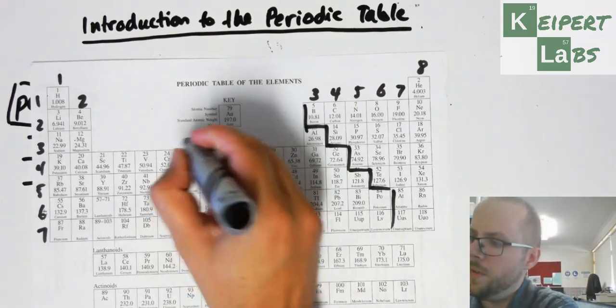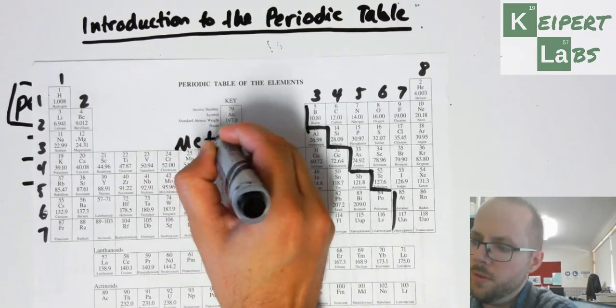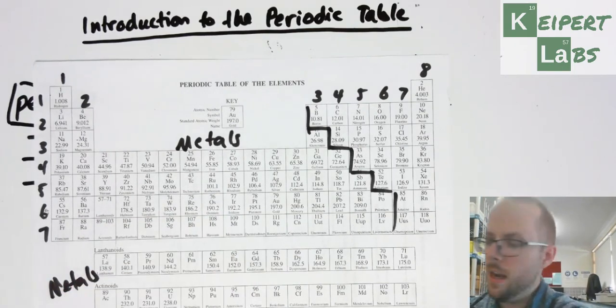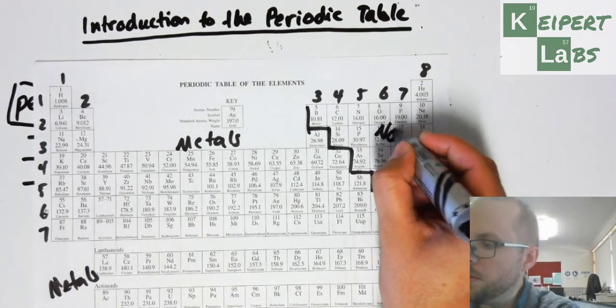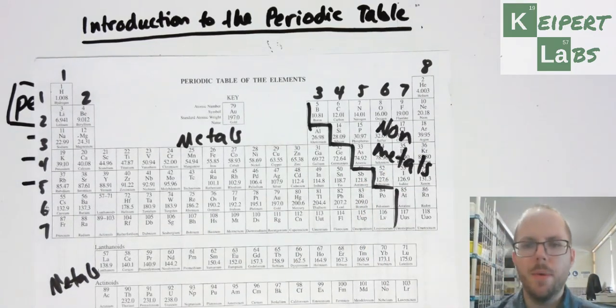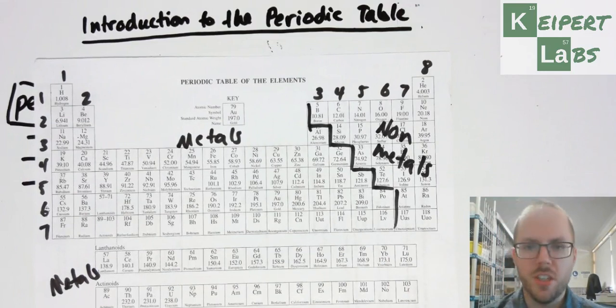So what we have on this side, we have metals - and that also includes these ones down here. And then on this side, we've got non-metals.